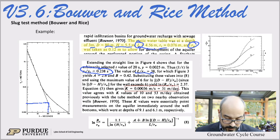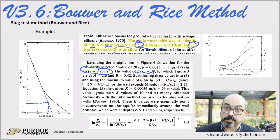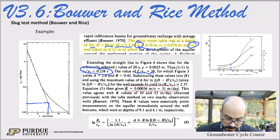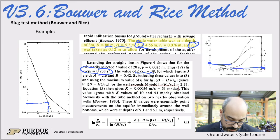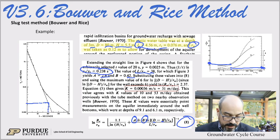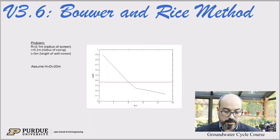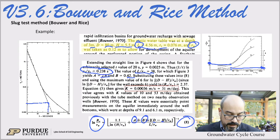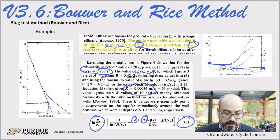For this value of l over rw equal to 38, you go read a and b from the curve. Since this is not a fully penetrating well, you read a and b: a is on the left-hand side, b is on the right-hand side. Then plug everything into equation 8 for the non-fully penetrating case — you have a, b, D, H, and everything else — and you get K equals 3.4 × 10⁻⁴ meters per second, or 31 meters per day.